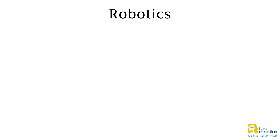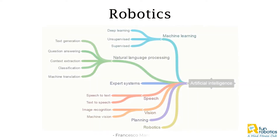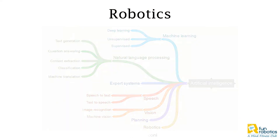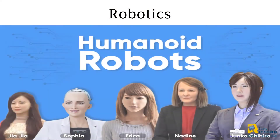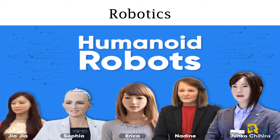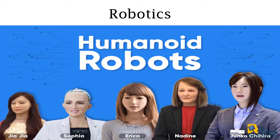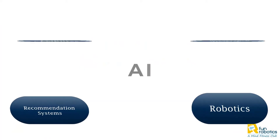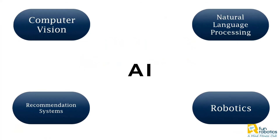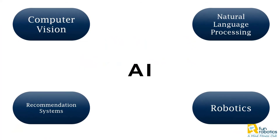Some robots actually use a combination of different AI applications, such as in humanoid robots, where it uses computer vision to visualize the surroundings, NLP to communicate with humans, and reinforcement learning to perform some mechanical tasks.